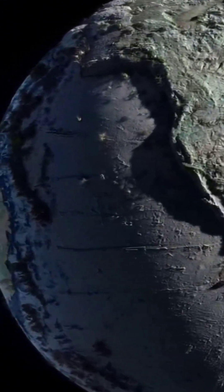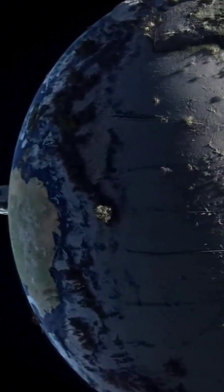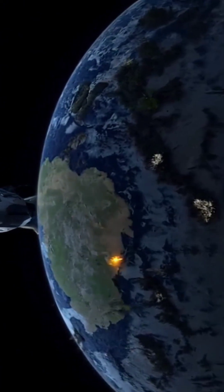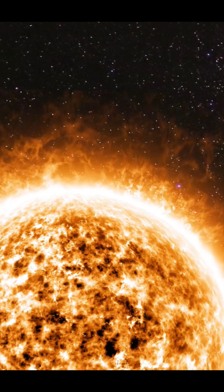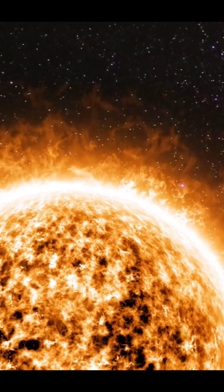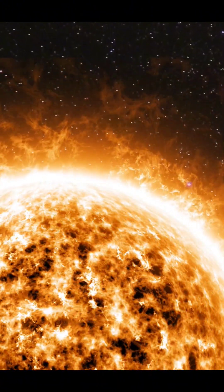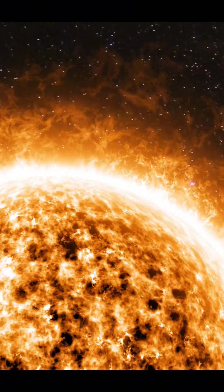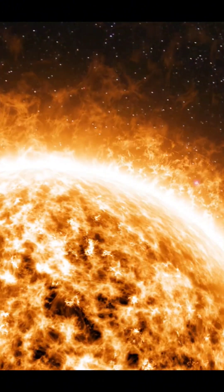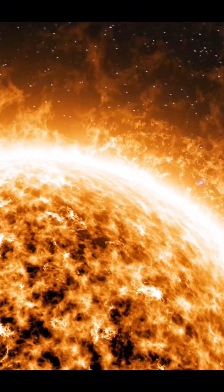Earth's water might seem vast, covering over 70% of the planet, but it's minuscule compared to the sun. The sun is over a million times larger than Earth and generates heat of millions of degrees at its core. So how does 1.4 billion cubic kilometers stack up? Spoiler alert, it doesn't.